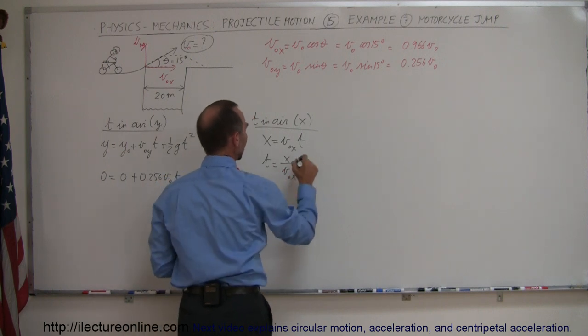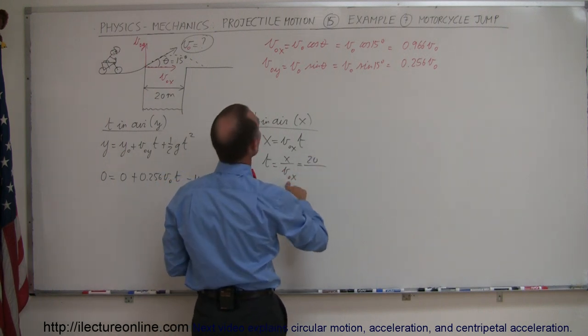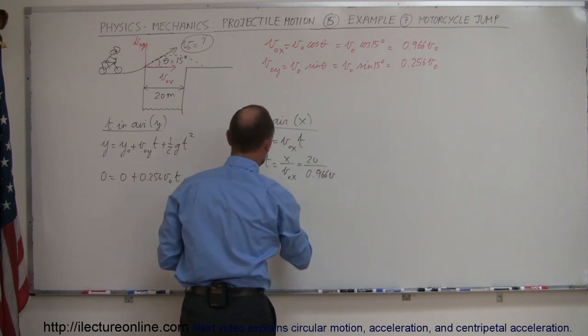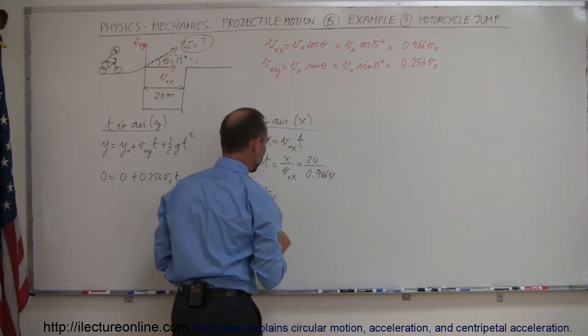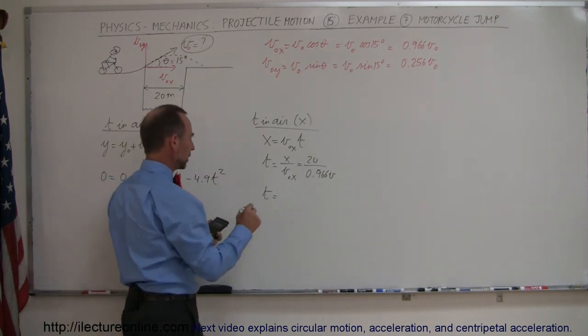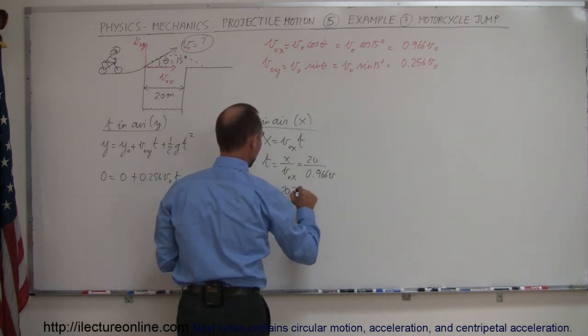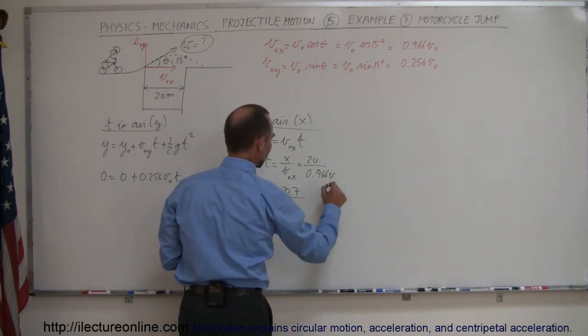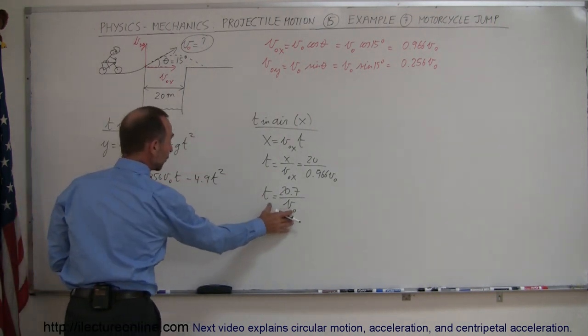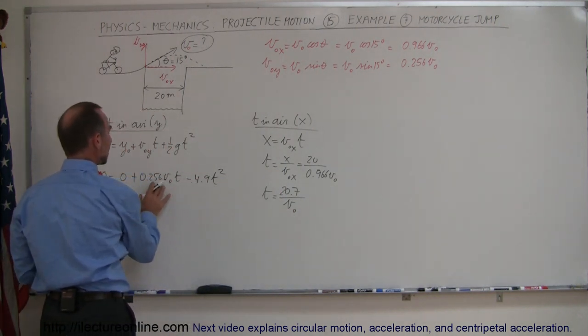In this case x is 20 meters, v initial in the x direction is 0.966 v, so time is equal to 20 divided by 0.966 equals 20.7 divided by v initial. All right so now we have time in terms of v initial here, and we have time and v initial in the same equation we could then plug that in and if we do that we only have one unknown left, v initial.